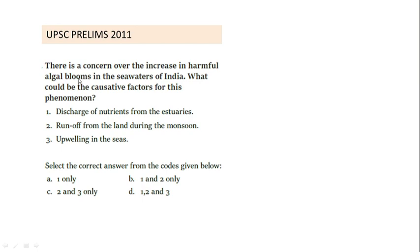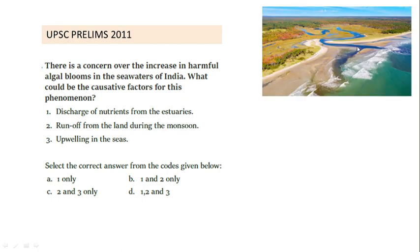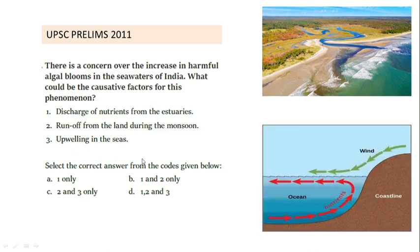Algal bloom is a phenomenon that takes place in seawater or any other water body whenever there is a high amount of nutrient content. Discharge of nutrients from estuaries causes more nutrient availability, leading to algal growth — so option 1 is correct. Runoff from land during monsoon, especially water rich in fertilizers, results in more nitrogen and phosphorus in the sea — so option 2 is also correct. Upwelling is a phenomenon by which water from the lower surface of the ocean gets circulated to the top, mixing nutrients and enabling algal growth — so option 3 is correct. Therefore, the correct answer is option D (1, 2, and 3).